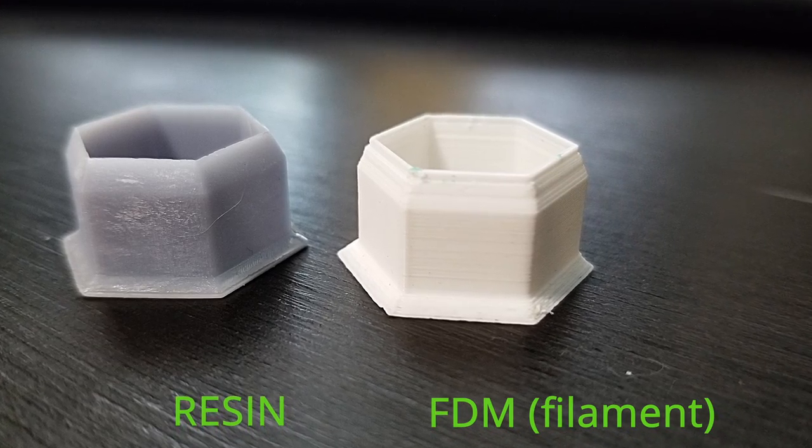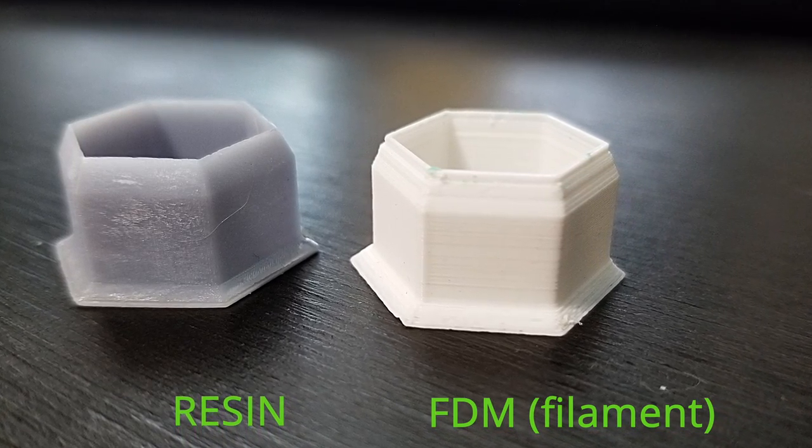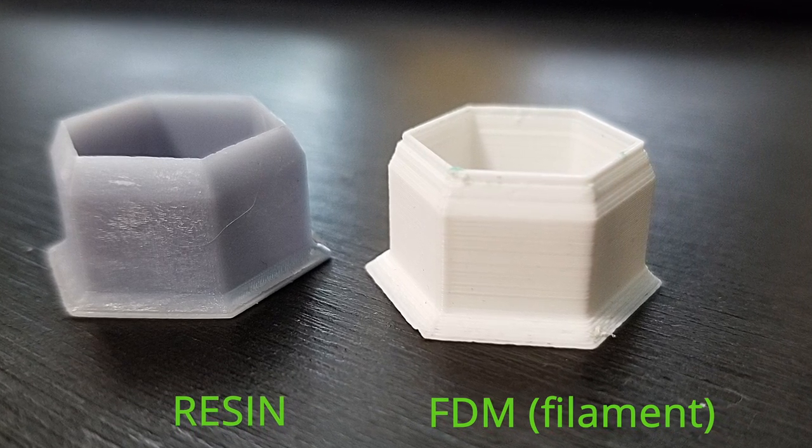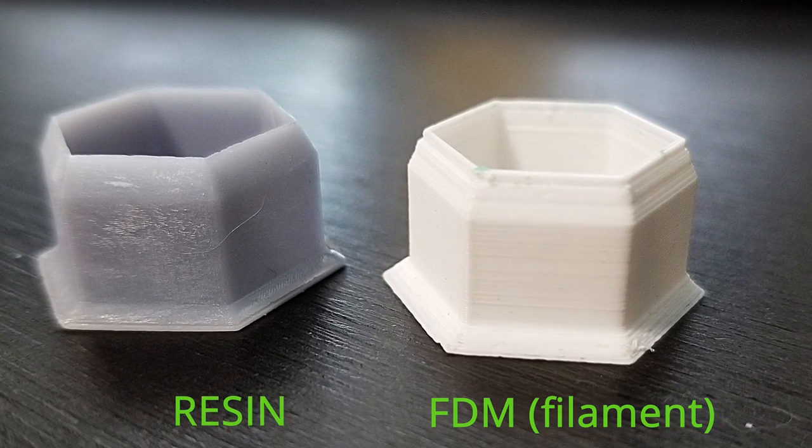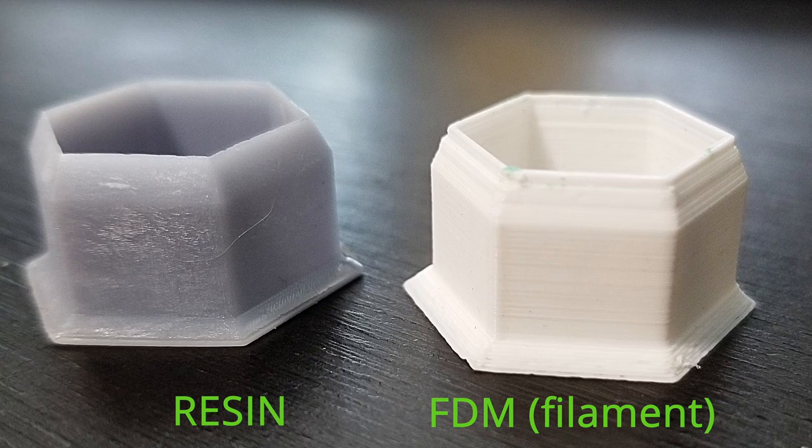So now you can start to see the issue with the FDM print versus the resin print. The resin print has a beautiful knife edge while the white one has more of like a ziggurat stepped pyramid kind of vibe. The nice sharp edge will help to cut the clay rather than just to mush it and leave jagged edges behind. So now I'll hand it over to Eva to see what she thinks and get some clay cutting done.